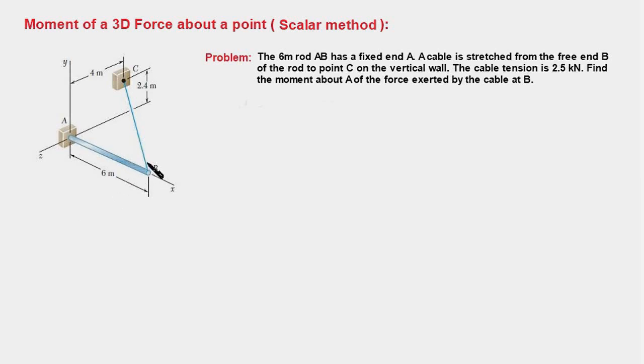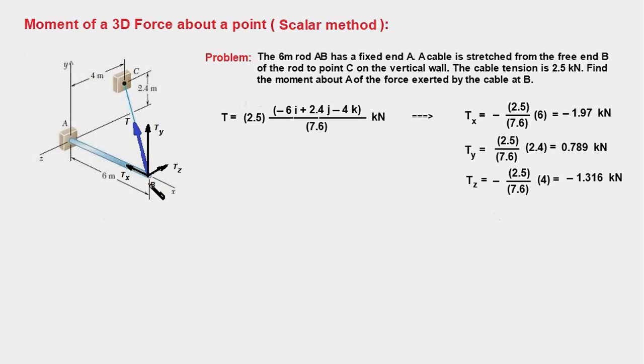The magnitude of the force acting at point B would be 2.5 kilonewtons acting in a direction from B to C. First and foremost, we have to determine the components of the force T. You can see here in this diagram that Tx, Ty, and Tz are the components.